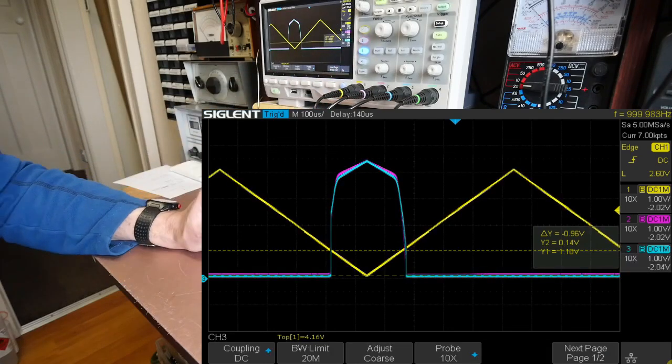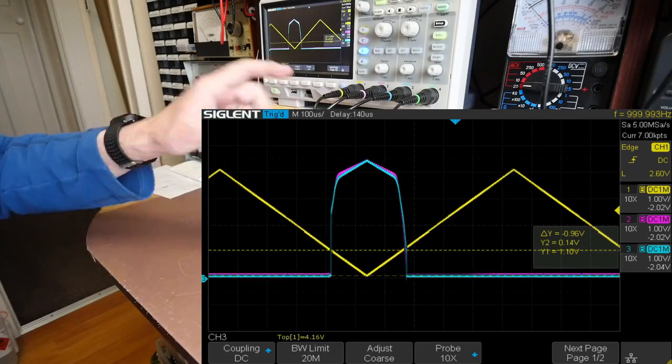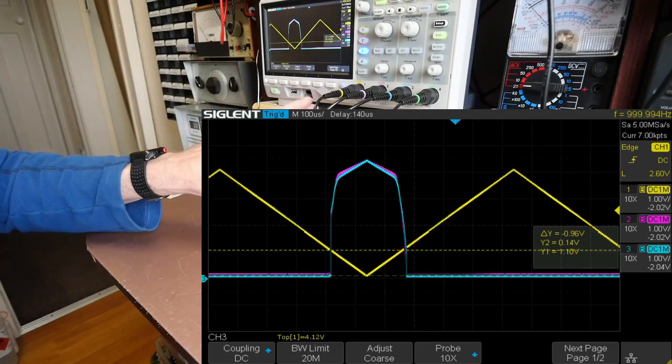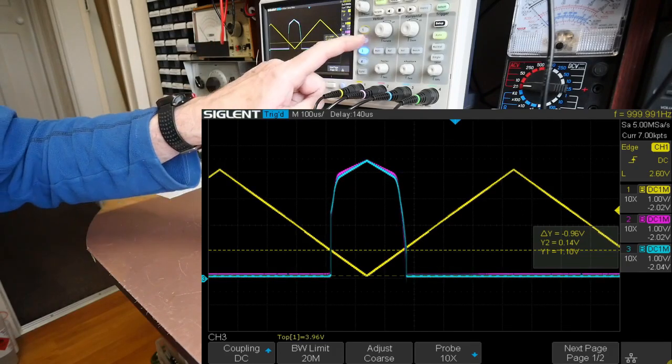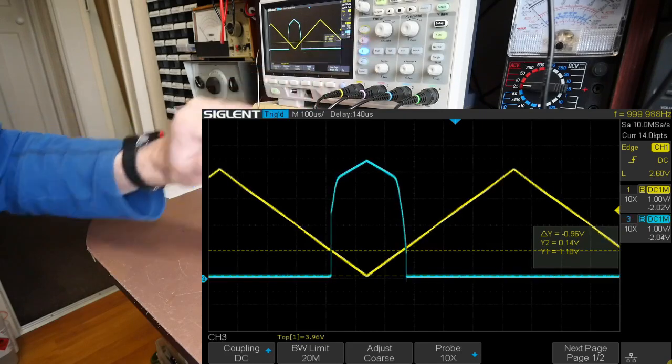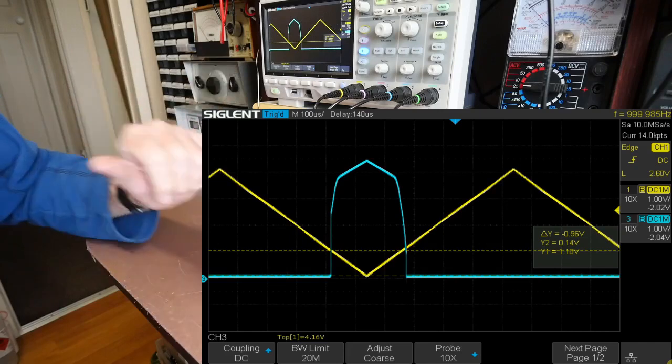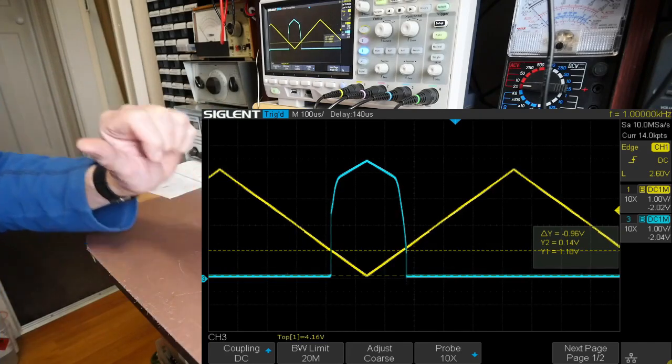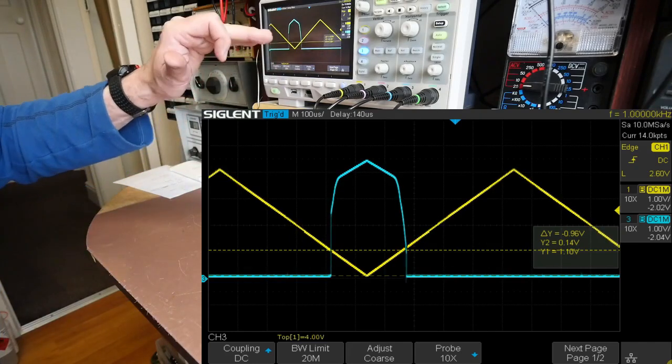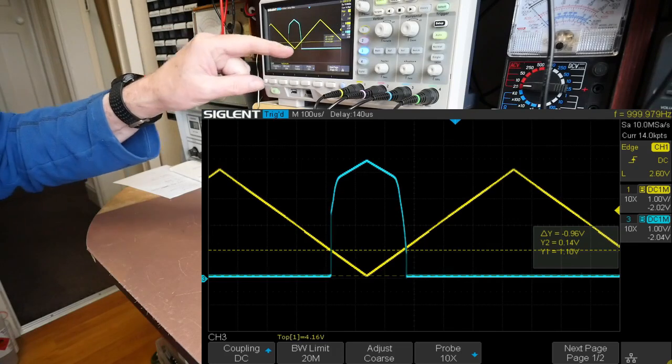If we turn on channel three which is the NAND gate configured as an inverter, you can see it's pretty much identical. We'll turn off the inverter now so that's just the NAND gate configured as an inverter, and pretty much identical performance with inversion occurring when the wave crosses at around about a volt.